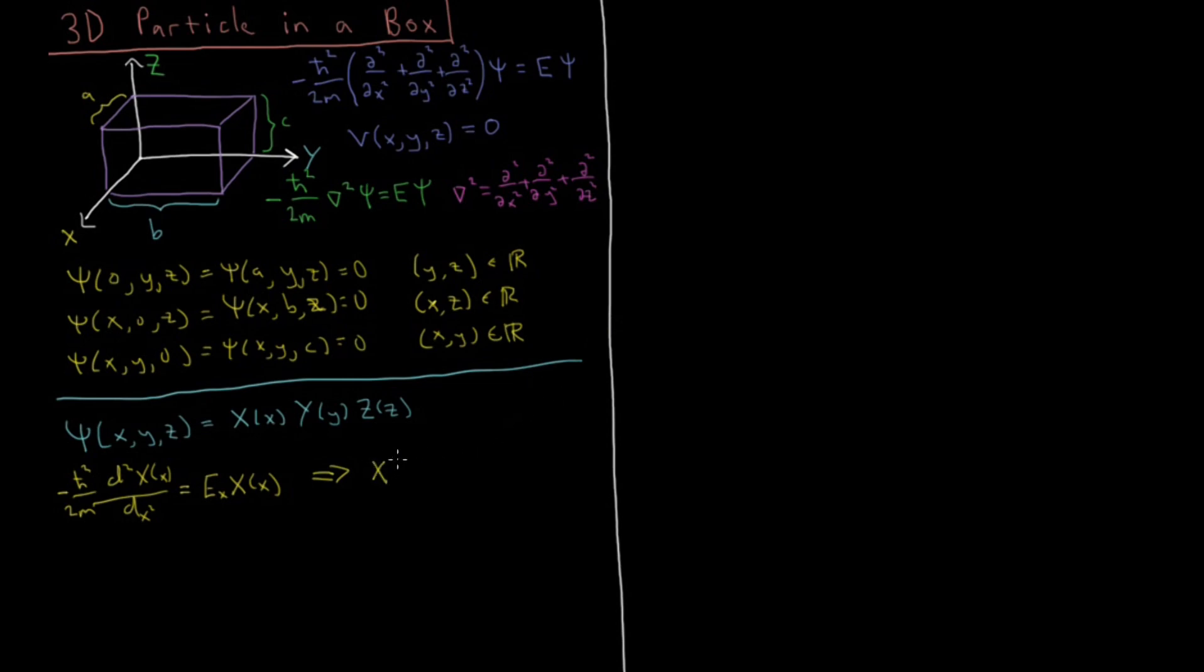The solution we get here is that x of x, the function which depends only on x, is some normalization constant a times sine nx because now we have a quantum number for only x, and then n pi x over a, where a is just the width of the box in the x dimension.